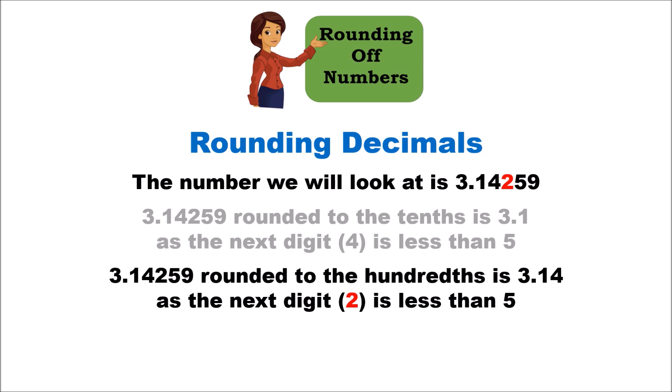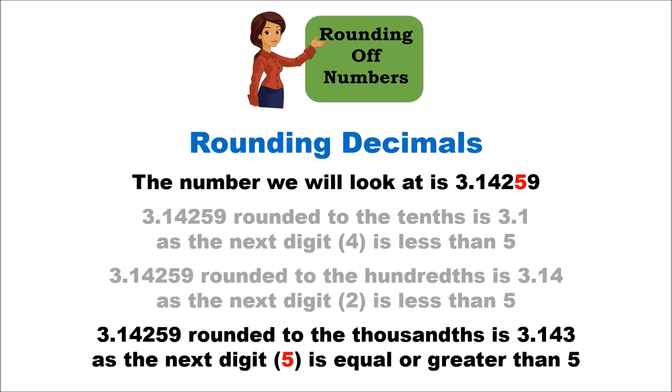If we round 3.14259 to the thousandths place, the number becomes 3.143. We keep the first three digits after the decimal place and look at the fourth digit to the right. In this case that digit is 5, which falls in the five-or-more bracket, so we increment the previous digit: instead of 3.142 it becomes 3.143.